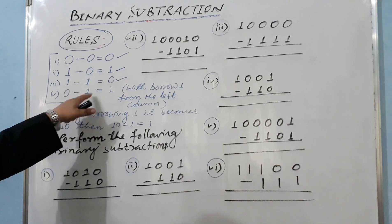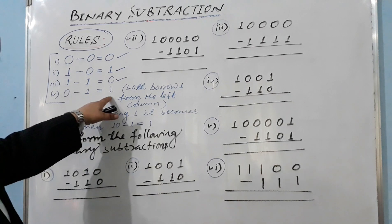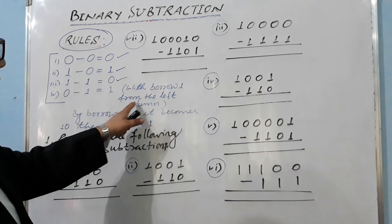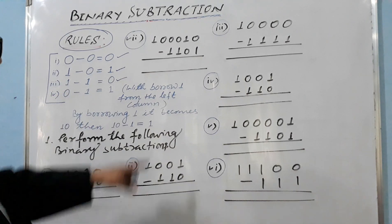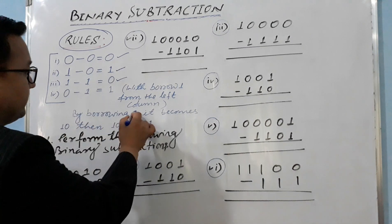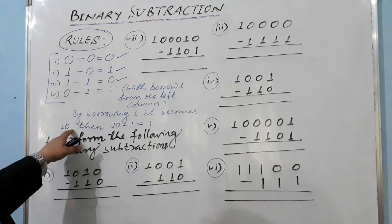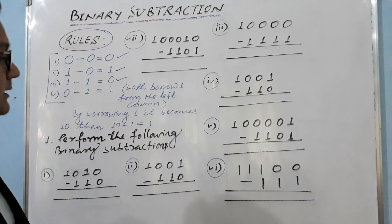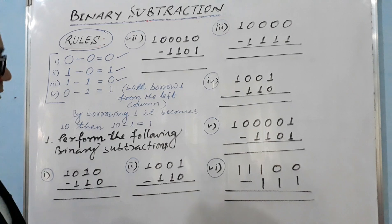Rule 4 — zero minus one: we write down one, but we have to take a borrow from the left column. By borrowing one from the left column, it becomes 10 (binary). Then 10 minus one equals one. If we see this in decimal numbers, 10 means two, so two minus one equals one.